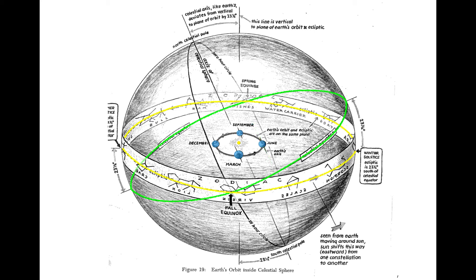Let's take a look at the Earth in June. Remember that the sun would appear to be in the twins, or Gemini, at this time of year. Notice how at this point the sun is pretty far away from the celestial equator — in fact it's 23 degrees away from the celestial equator toward the north celestial pole.